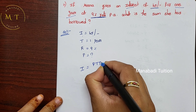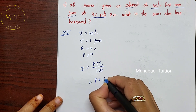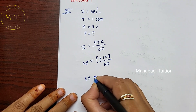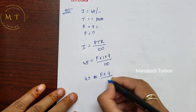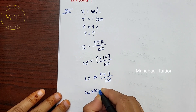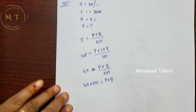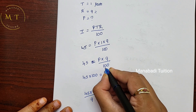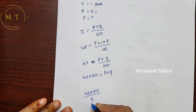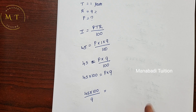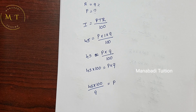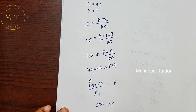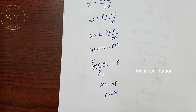Using I = PTR by 100: 45 = P into 1 into 9 by 100. Transpose 100 to the left: 4500 = 9P. Divide both sides by 9: P = 500. So principal equals 500 rupees.